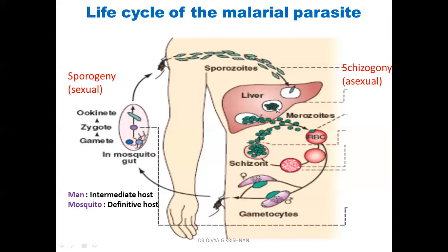Some merozoites remain dormant in the liver and these are called hypnozoites. These are very significant because they can cause a relapse of infection many months after the initial infection, when the hypnozoites become reactivated. This is seen only in the case of Plasmodium vivax and Plasmodium ovale. So the merozoites cause symptoms, some develop into gametocytes, and some remain dormant as hypnozoites.